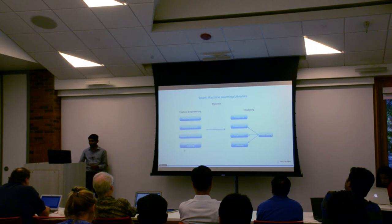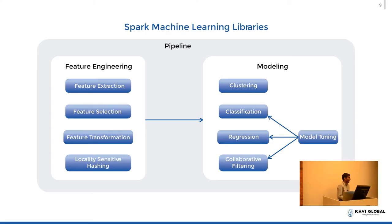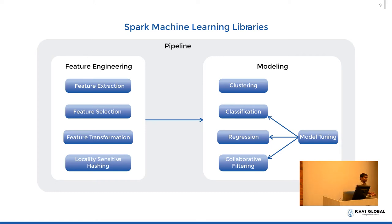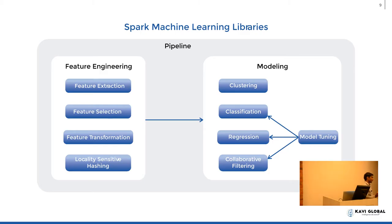We will go into the machine learning libraries. These are the high-level capabilities of machine learning libraries within Spark. You have two broad categories: feature engineering and modeling. Features are the attributes needed to build a model — the independent variables used for prediction. Feature engineering means doing some transformation, extraction, and selection — essentially some manipulation of the features to make them model-ready, because the data we get for any modeling is not clean and needs to be cleaned.